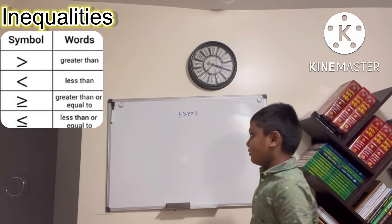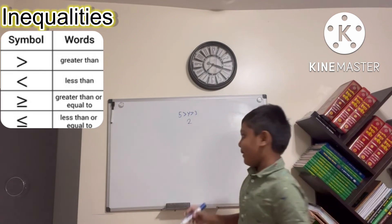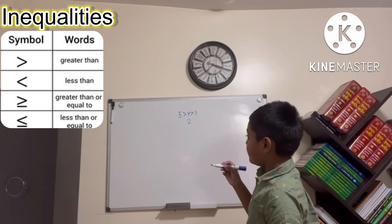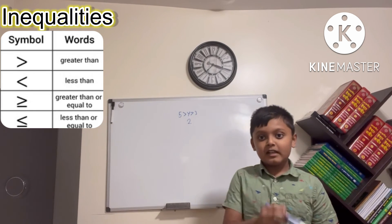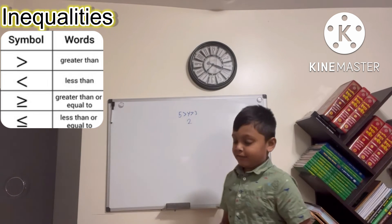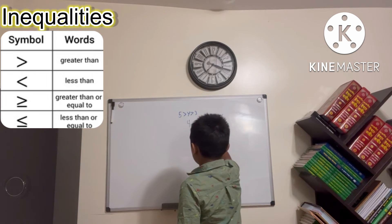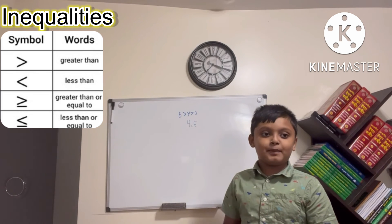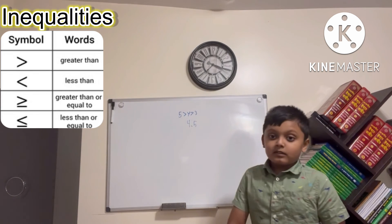This might seem tricky — don't get fooled. If five is larger than y and y is larger than three, the answer can't be a whole number between five and three that fits perfectly, so it has to be a decimal. For example, 4.5 works — five is still bigger than 4.5, and 4.5 is bigger than three, so it's true.